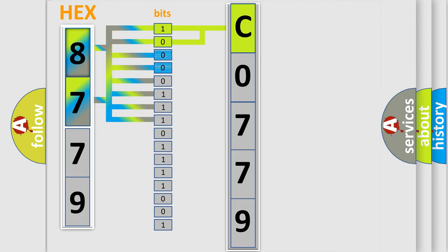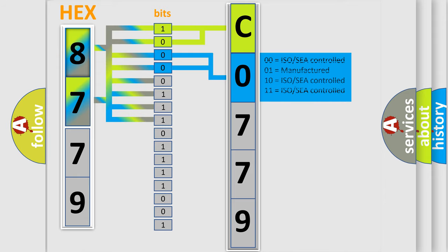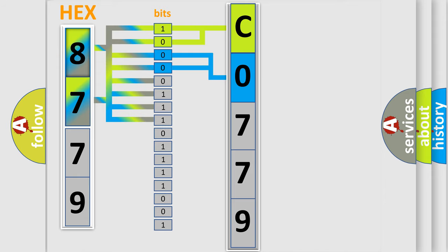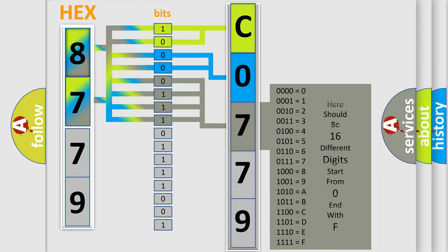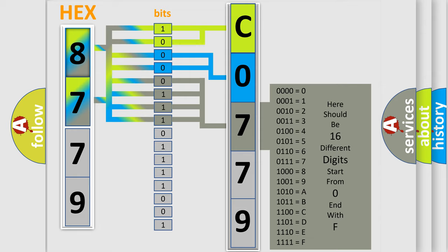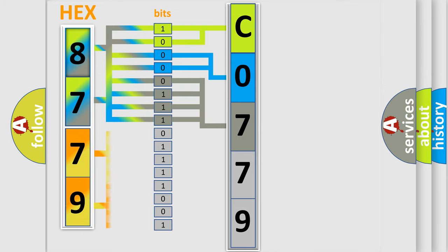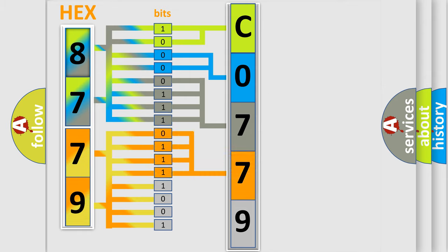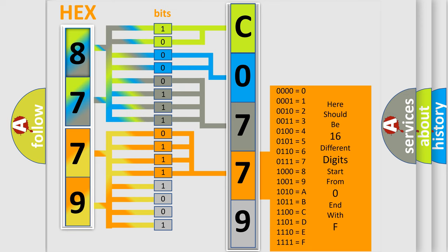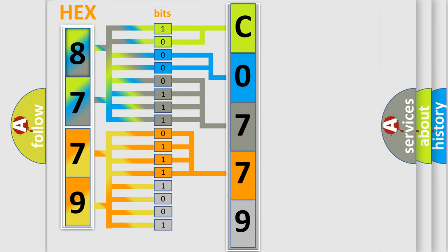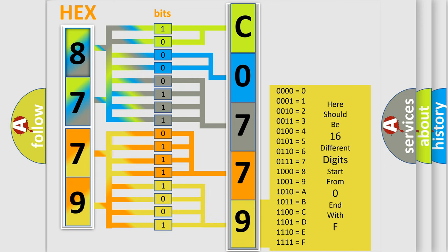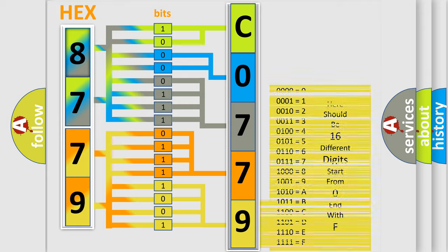The next two bits again determine the second character. The last bits of the first byte define the third character of the code. The second byte is composed of a combination of eight bits. The first four bits determine the fourth character of the code, and the combination of the last four bits defines the fifth character. A single byte conceals 256 possible combinations. We now know in what way the diagnostic tool translates the received information into a more comprehensible format.